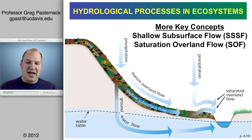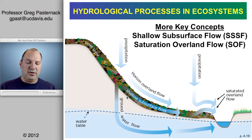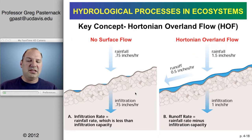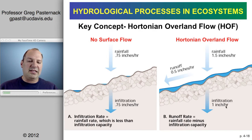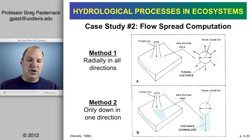To summarize: Hortonian overland flow occurs when the rainfall rate exceeds the infiltration rate — regardless of how much water is in the ground. We're simply exceeding the soil surface's capacity to absorb water. In this study, we're going to assume Hortonian overland flow.